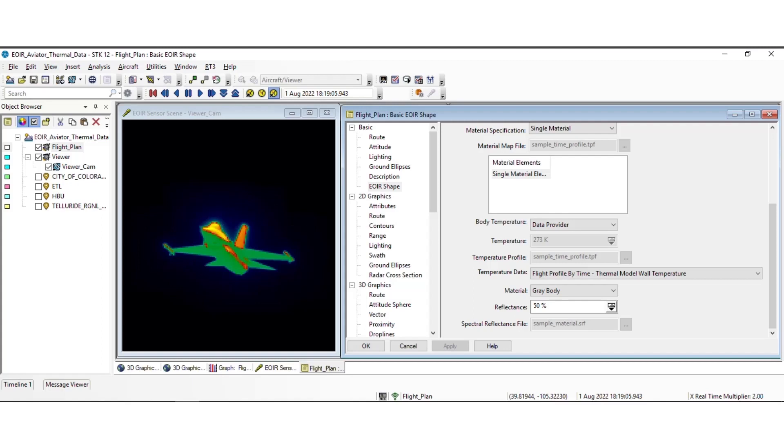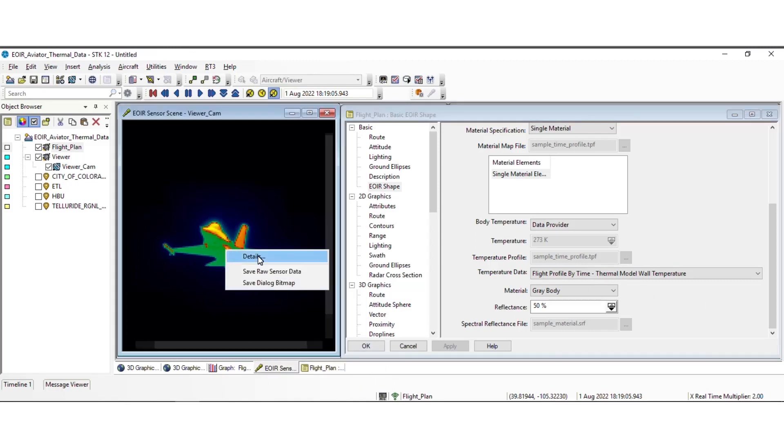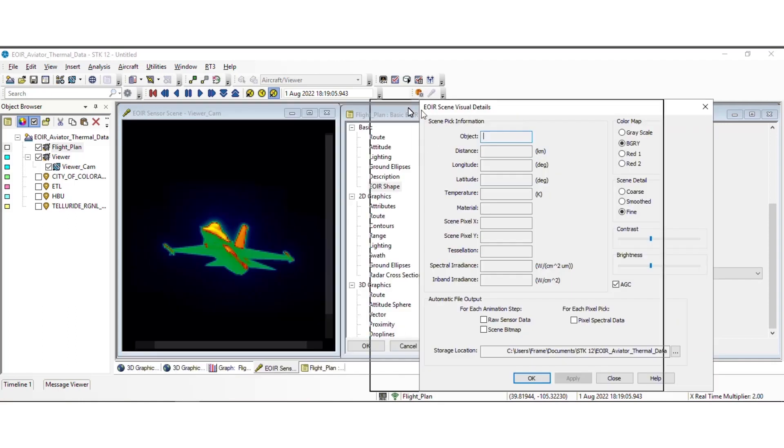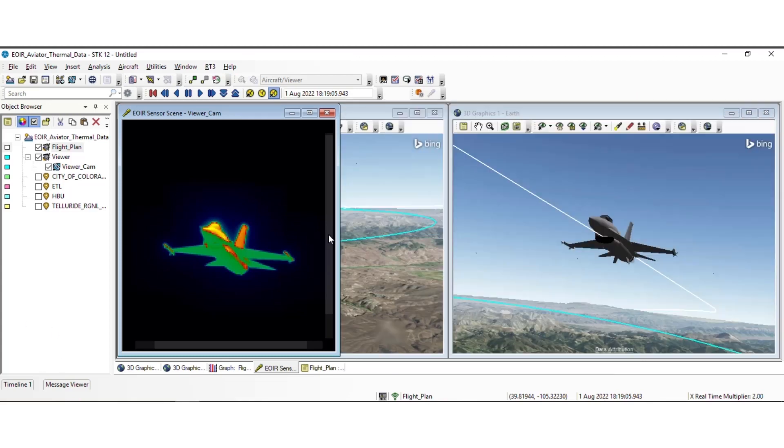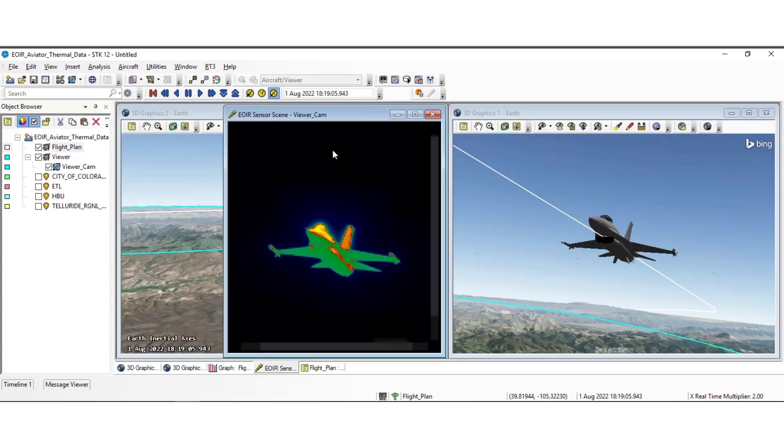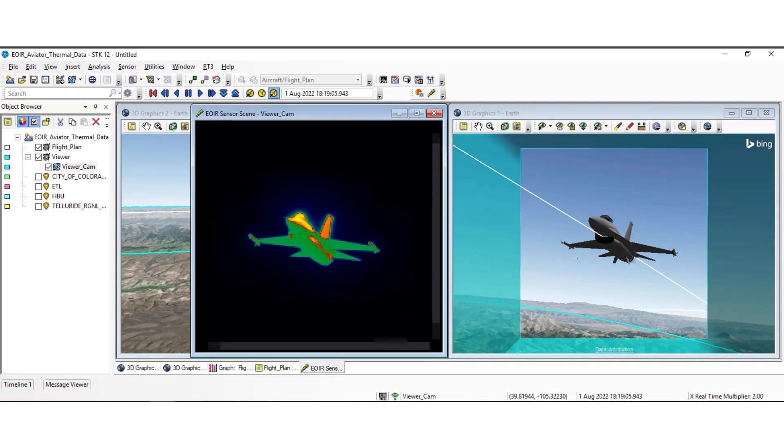The process of designing an EOIR sensor fit for its mission requires the ability to provide realistic target properties against which you can simulate its performance. SDK now allows the automatic association of SDK-generated aircraft thermal profiles as EOIR sensor target definitions. This eliminates the manual process of first flying a test trajectory and then exporting, reformatting, and subsequently re-importing the data for EOIR consumption.